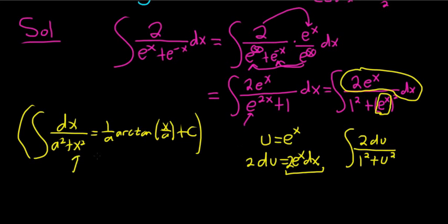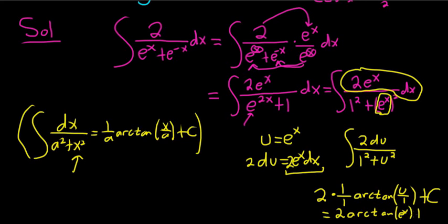And now we can use our very cool formula. So this is going to be 2, because the 2 hangs out, times 1 over A, so 1 over 1, arctangent of u over 1. So I'll write u over 1 plus our arbitrary constant of integration. So this is equal to 2 arctangent of u, and u was e to the X. And we still have our plus C.